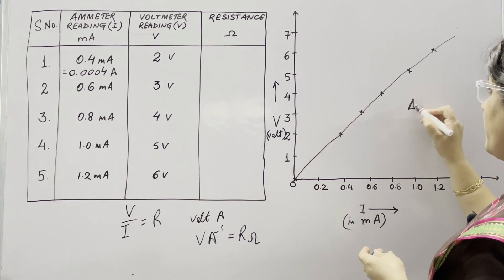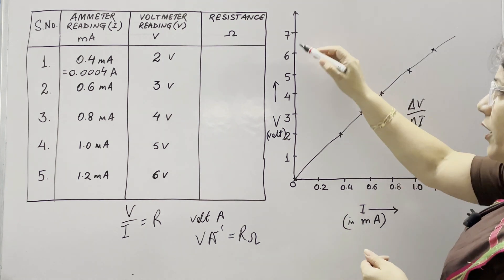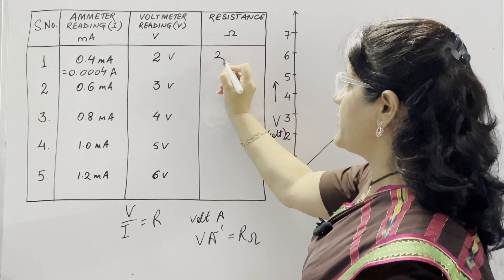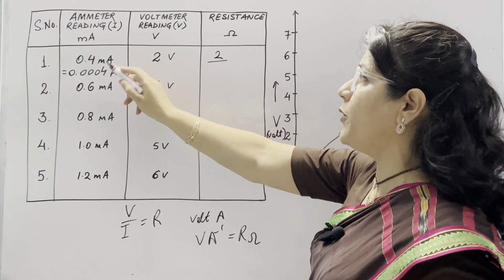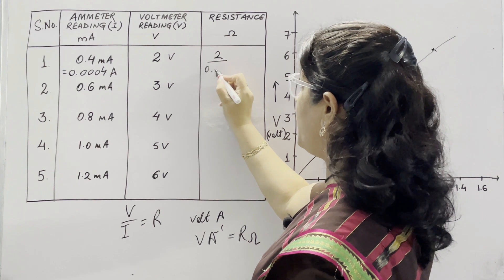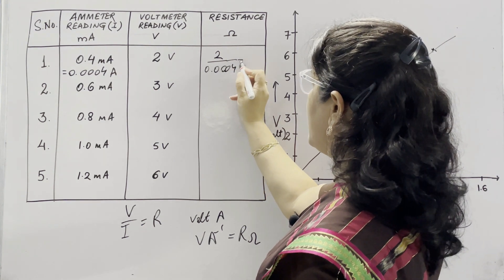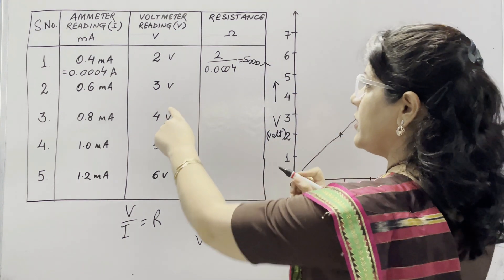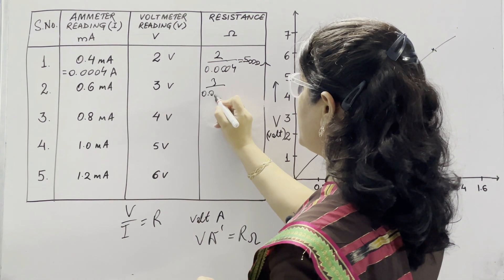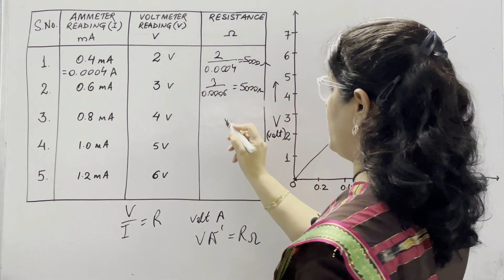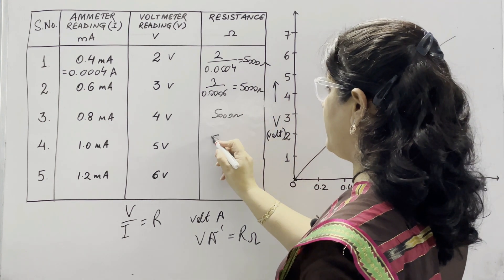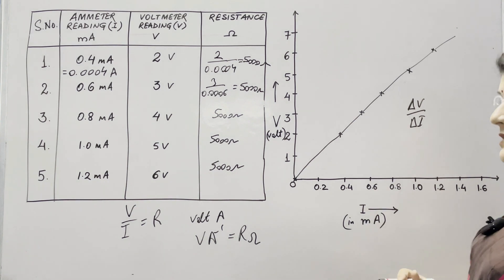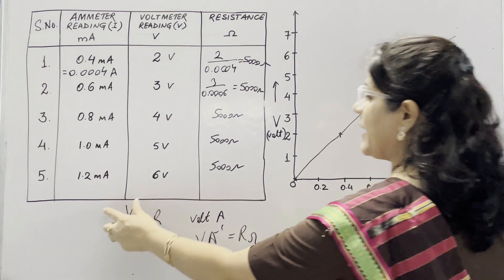We will find the value of resistance by finding the slope of this graph. For finding the slope, we need delta V upon delta I — voltage on the Y axis and current on the X axis. Our voltage reading is 2 volt and milliammeter reading is 0.4 mA; converting to ampere, it is 0.0004, and the value of resistance comes out to be 5000 Ohm. Similarly, dividing 3 by 0.0006, we get 5000 Ohm, and in all other cases we also get 5000 Ohm. So V upon I is a constant known as resistance.